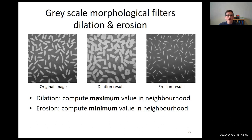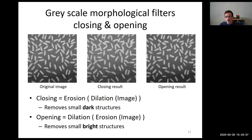Morphological operations can also operate on grayscale images. Erosion and dilation can be understood as computing the minimum or maximum pixel value within a neighborhood defined by the structuring element. Dilation increases the area occupied by bright pixels; erosion increases the area occupied by dark regions. Morphological closing and opening are useful for filtering images to remove speckle noise — they remove bright or dark areas whose size is smaller than the structuring element.